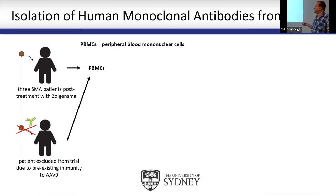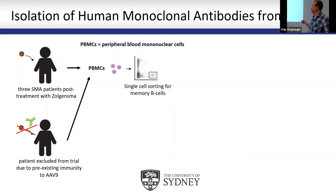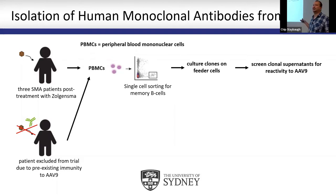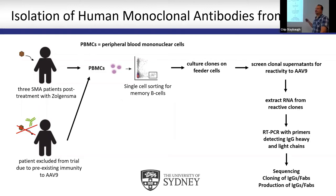The isolation worked by obtaining PBMCs — peripheral blood mononuclear cells — from these patients. They were sorted for single memory B cells, which were cultured on feeder cells. The supernatants were screened for antibodies that react to AAV9 capsid. From the positive clones, RNA was extracted to determine sequences from the heavy and light chains using RT-PCR and sequencing, resulting in unique sequences that we cloned to generate IgGs and FABs that can then be produced. This was a collaboration with the University of Sydney.